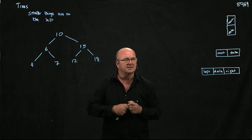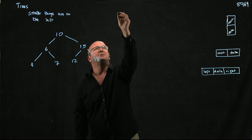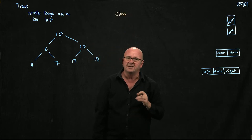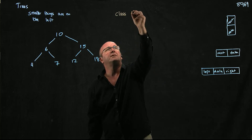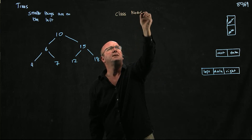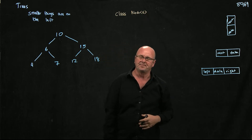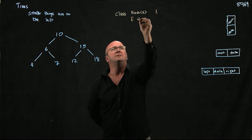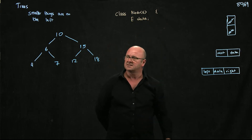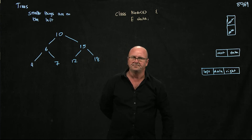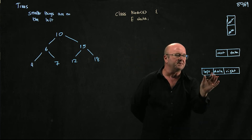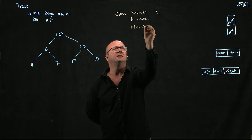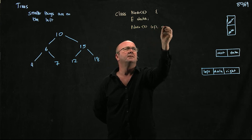Our node class, as part of our tree, is going to be an inner class — just like we had a node class in our linked list. We'll have a Node E class. We're going to store our data somewhere, and then we'll have two Node E's, one for left and one for right.